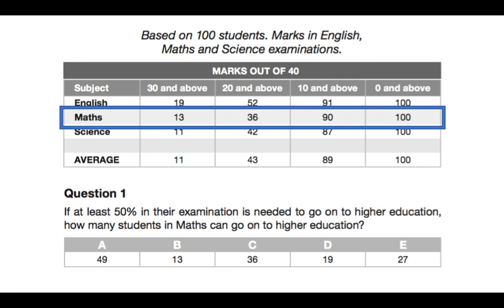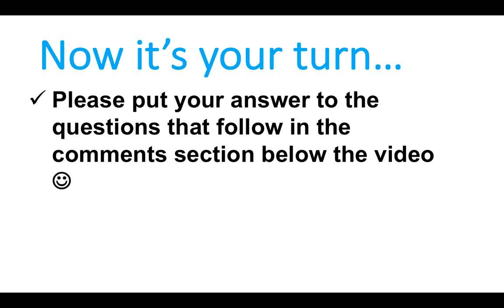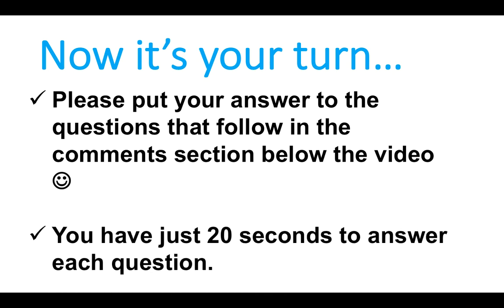Just to recap: we focus on the maths section only. If at least 50% is needed, and marks are out of 40, then 50% is 20. So we focus on 20 or above, and the answer is 36. The next question I want you guys to have a go at is based on the same chart — please put your answer in the comments section below the video.